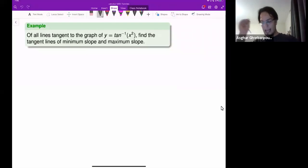Of all lines tangent to the graph of tan inverse of x squared, find the tangent lines of the minimum slope and maximum slope.